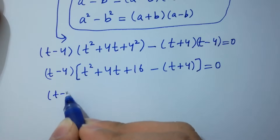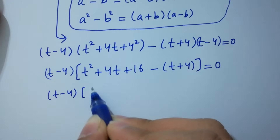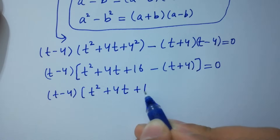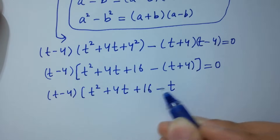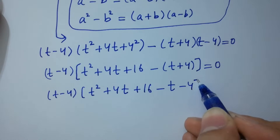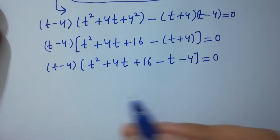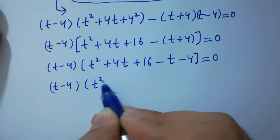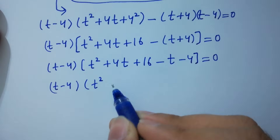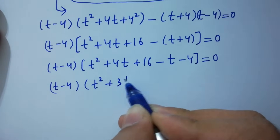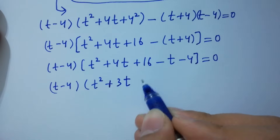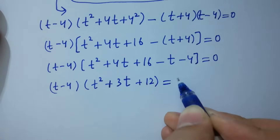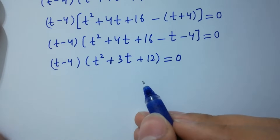This becomes t squared plus 4t plus 16 minus t minus 4 equals zero, which simplifies to t squared plus 3t plus 12 equals zero. So we have two cases: Case 1 — t minus 4 equals zero.